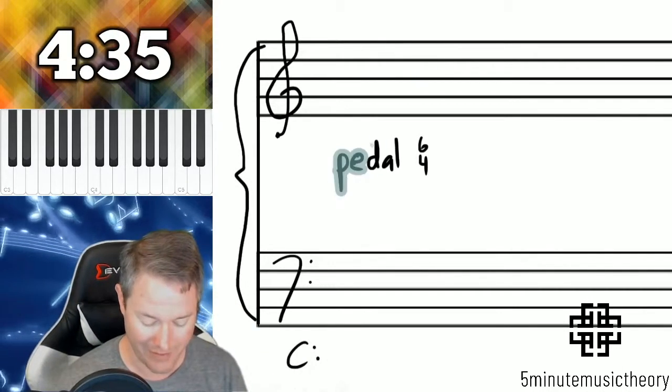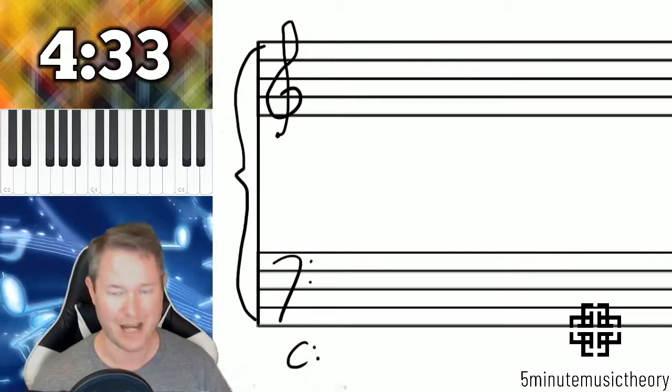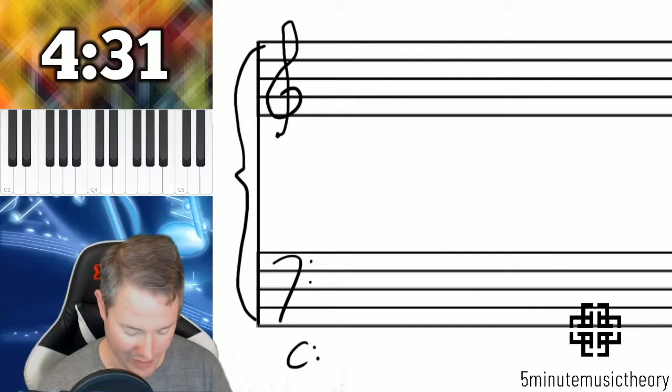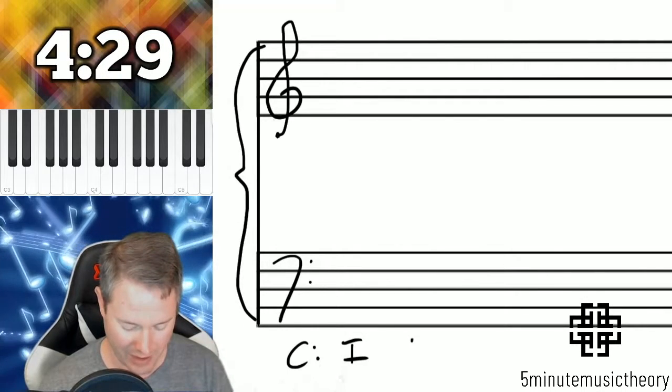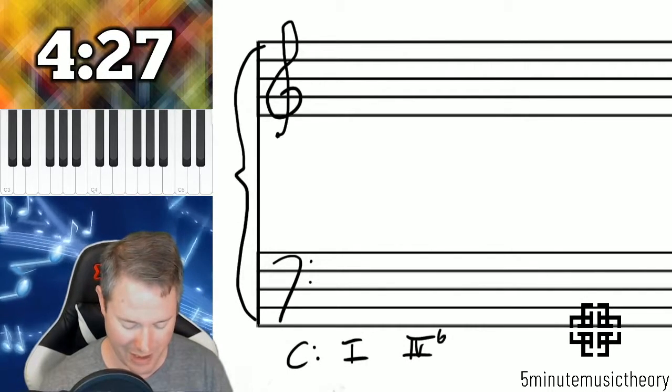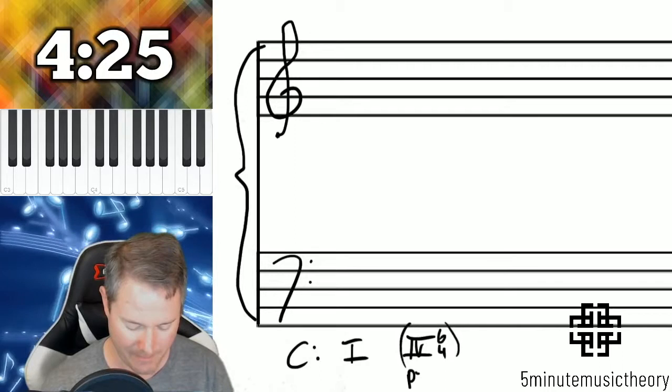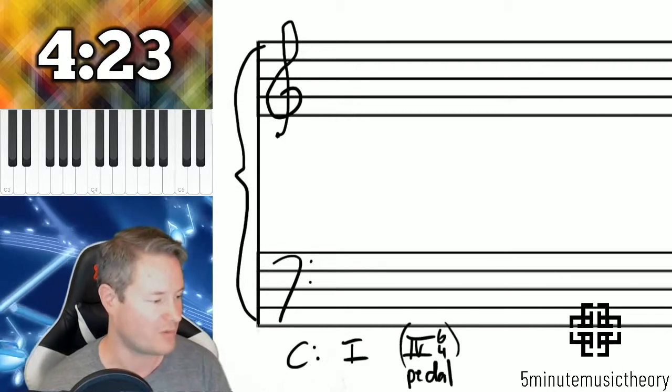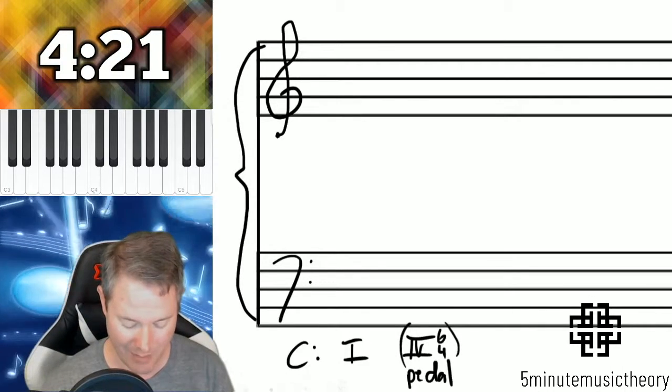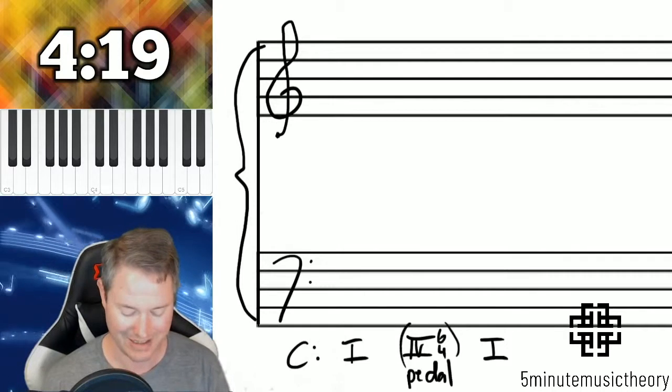So I'll show you the most by far common type of pedal 6-4, and that would be this. We start with a tonic chord and then we're going to use a subdominant pedal 6-4 in between. Remember 6-4s are non-functional, so you have to indicate that by putting them in parentheses and indicating the type.